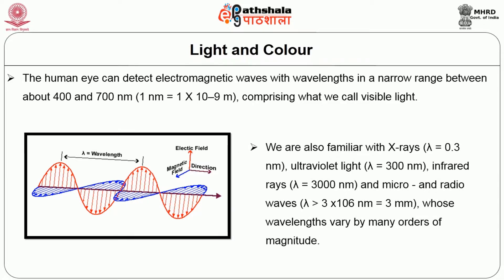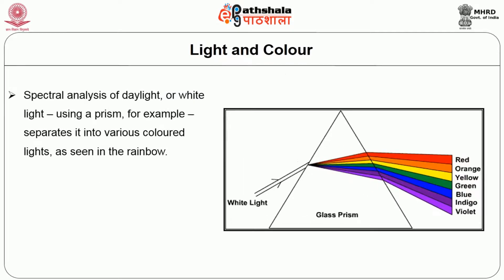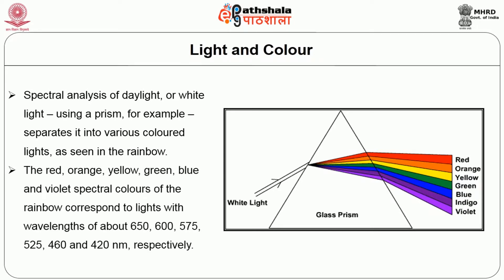We are also familiar with X-rays, ultraviolet rays, infrared rays, and micro and radio waves, whose wavelengths vary by many orders of magnitude. Spectral analysis of daylight or white light using a prism, for example, separates it into various colored light, as seen in the rainbow. The red, orange, yellow, green, blue, and violet spectral colors of the rainbow correspond to lights with wavelengths of about 650, 600, 575, 525, 460, and 420 nm, respectively.